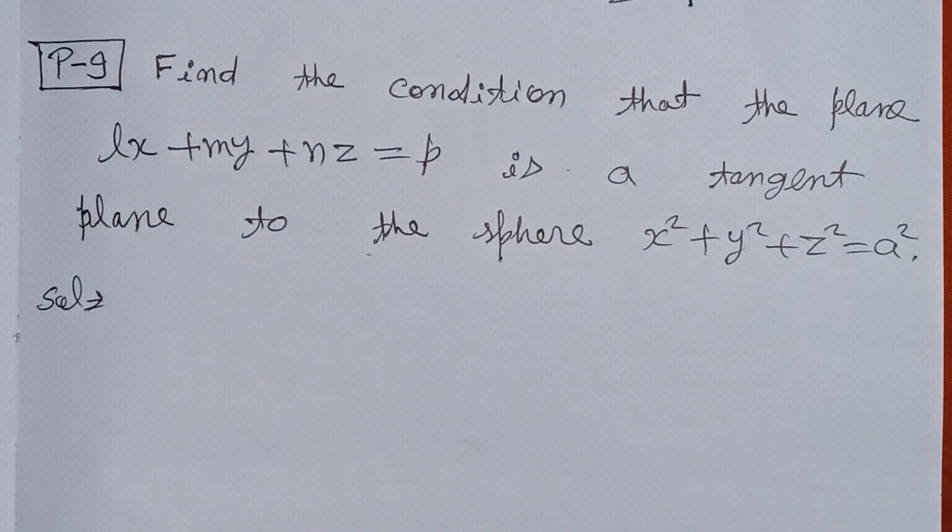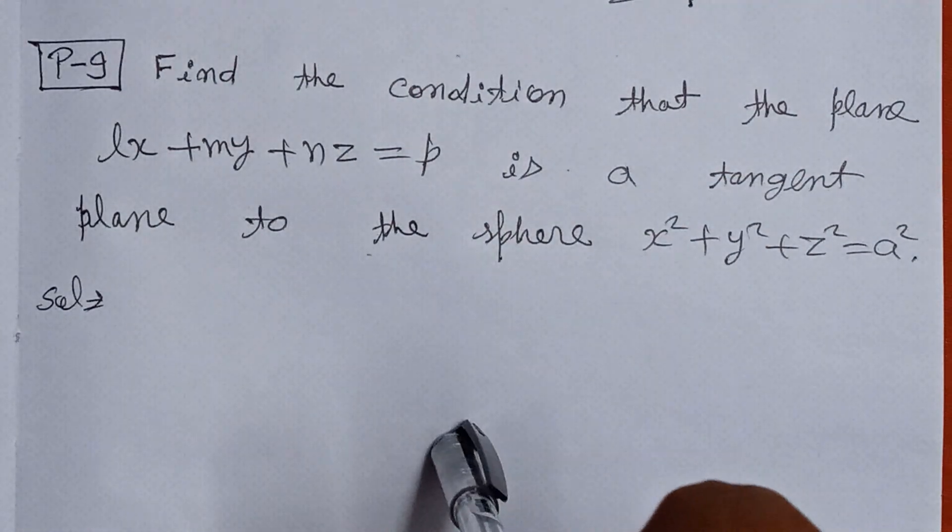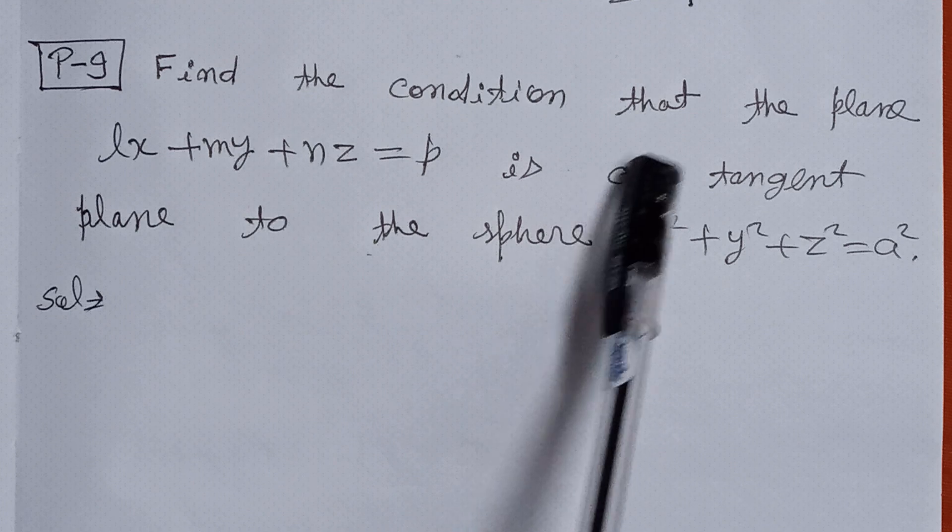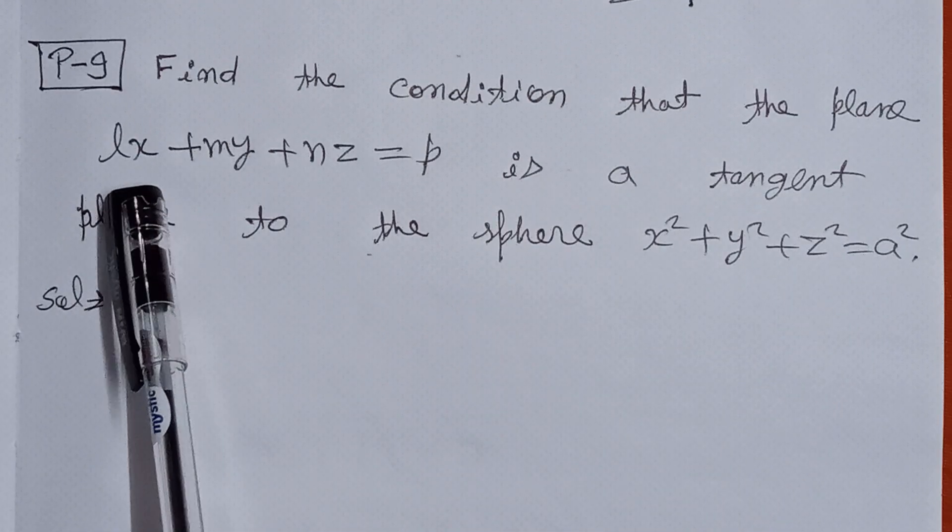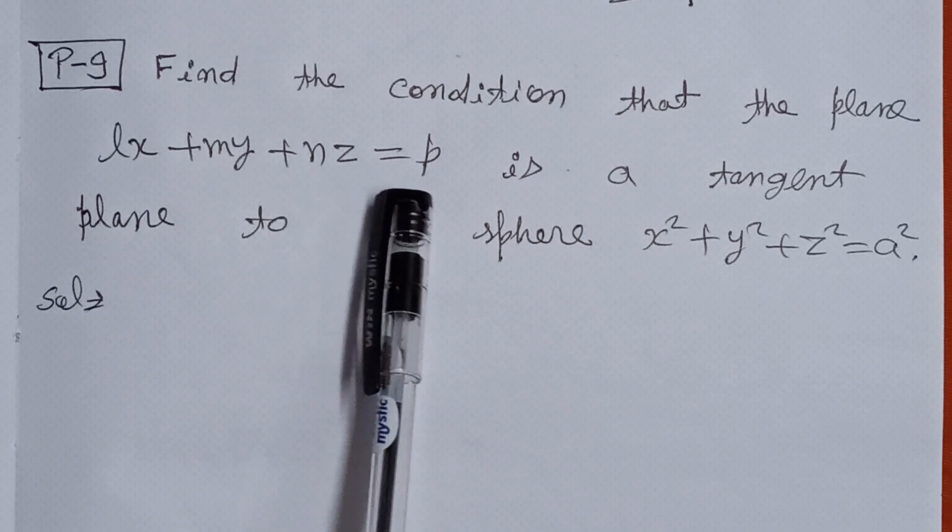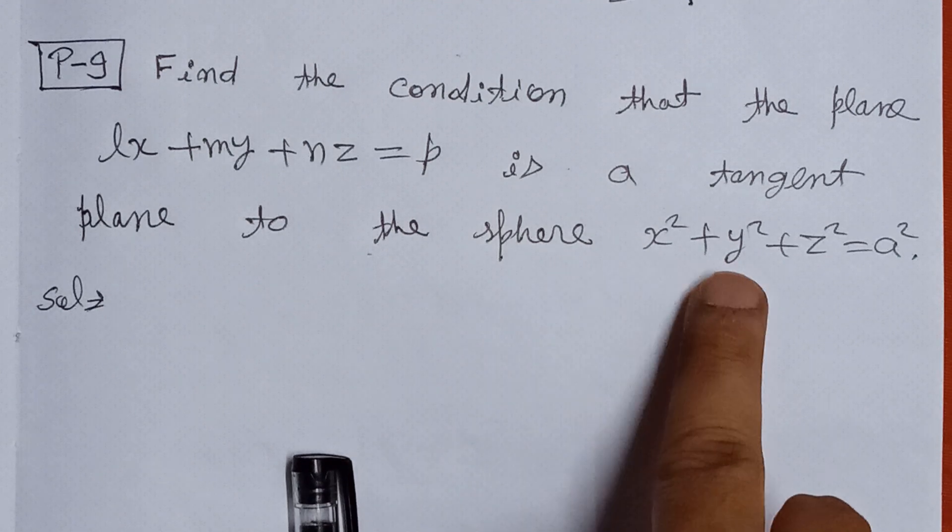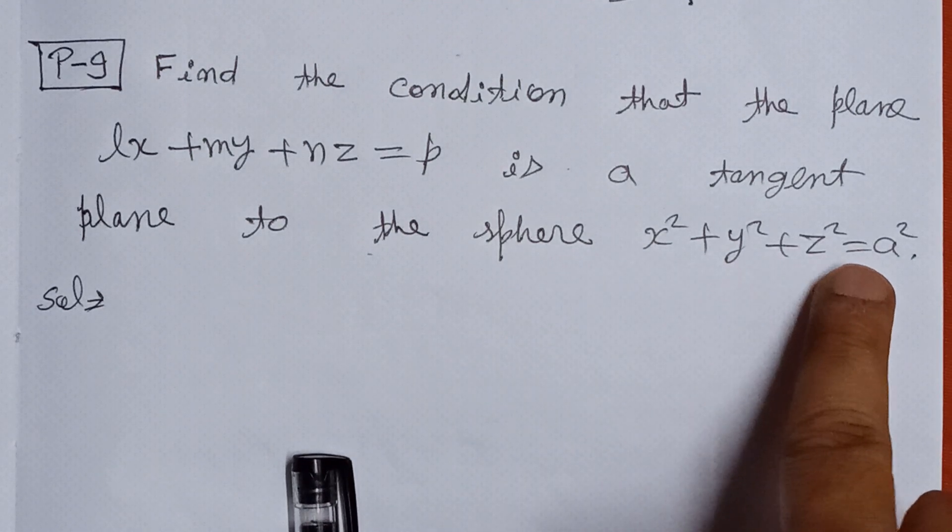This problem is related to three-dimensional coordinate geometry, or 3D. Find the condition that the plane lx + my + nz = p is a tangent plane to the sphere x² + y² + z² = a².